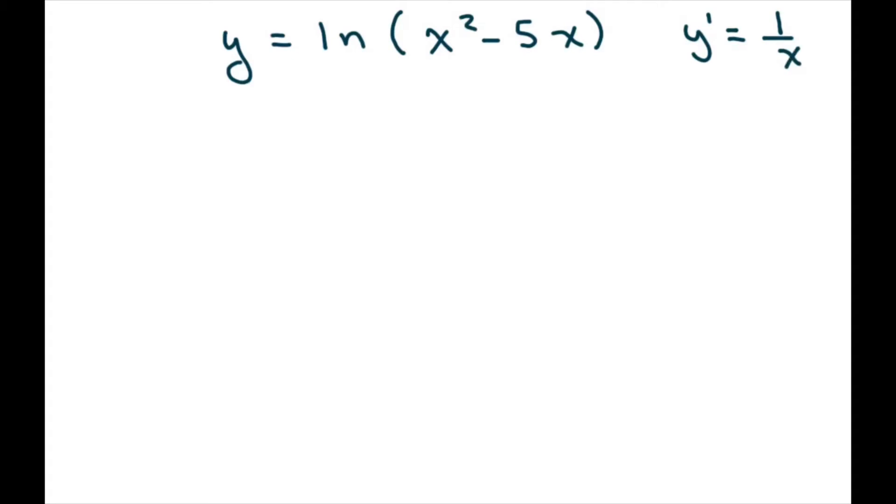So what we're going to do is take the derivative of this, so y prime, and we're going to act like this is x. So this is 1 over what our x is, which is x squared minus 5x.